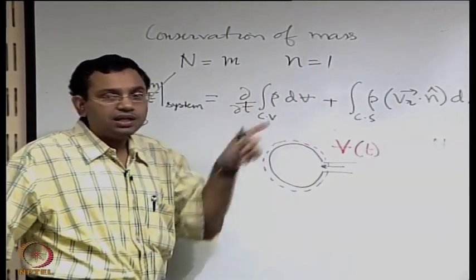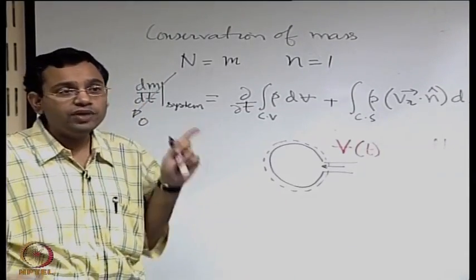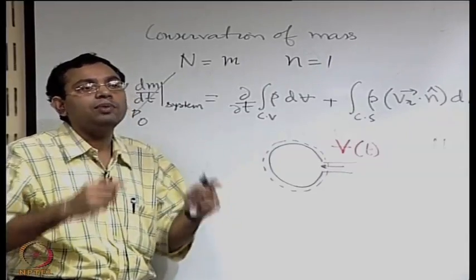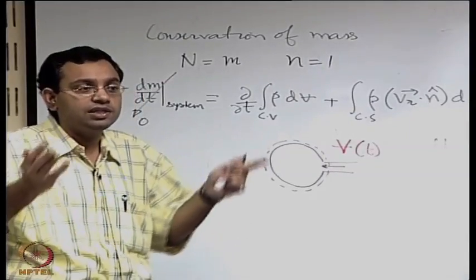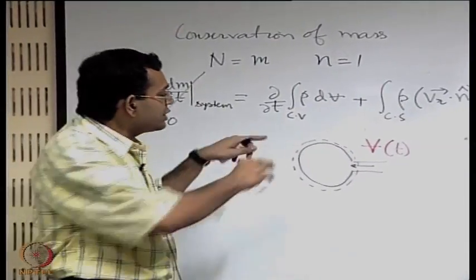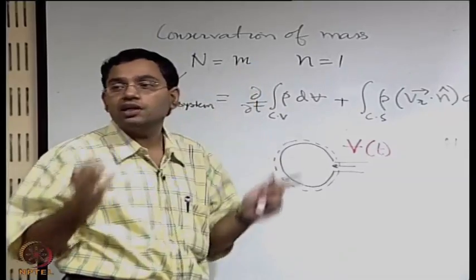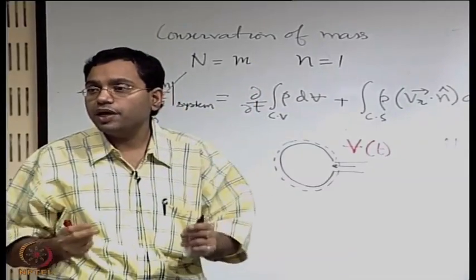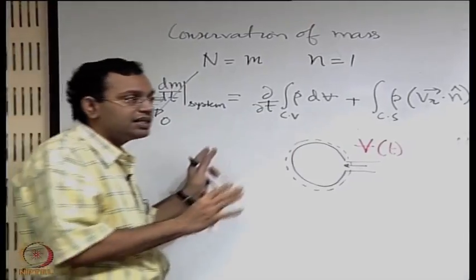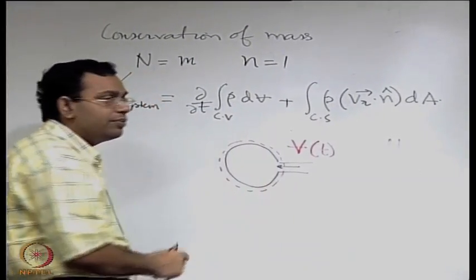So in the most general case, V may be moving and V may be deformable — moving and deformable are two different things. When we say it is moving, it need not be deformable; it may be moving like a rigid body. When it is deformable, it might be locally stationary but deforming. And when it is both moving and deformable, that is the most general case — it might move as well as continuously deform. All those possibilities are there.